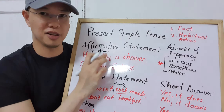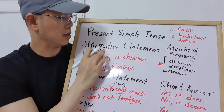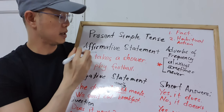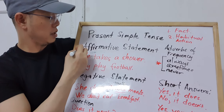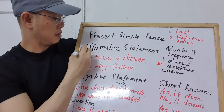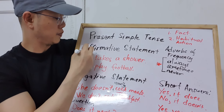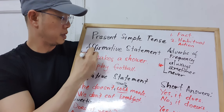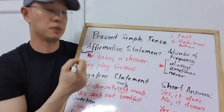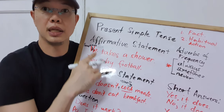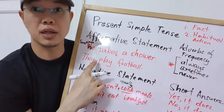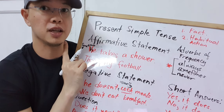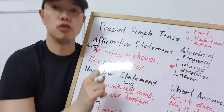So you can say either 'He sometimes takes a shower,' or 'Sometimes he takes a shower.' Placing 'sometimes' or 'usually' at the front of the sentence is only the case for these two adverbs.